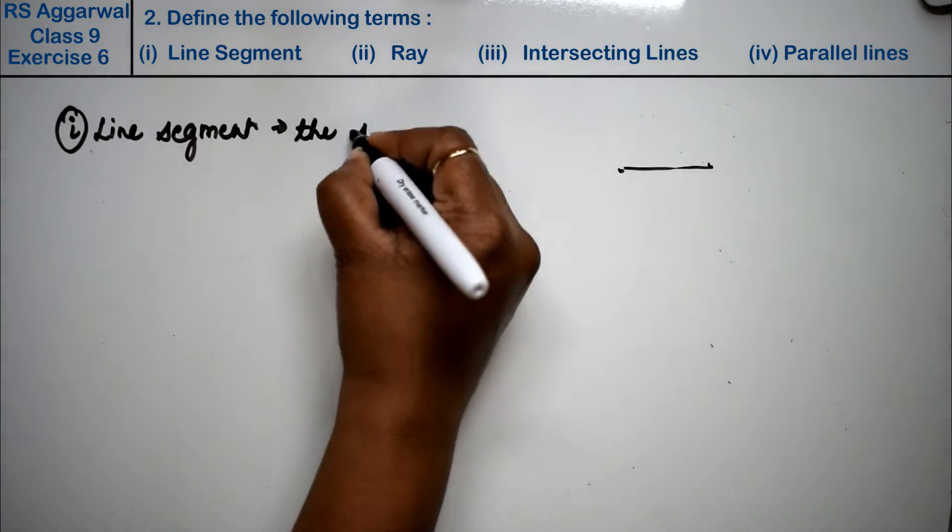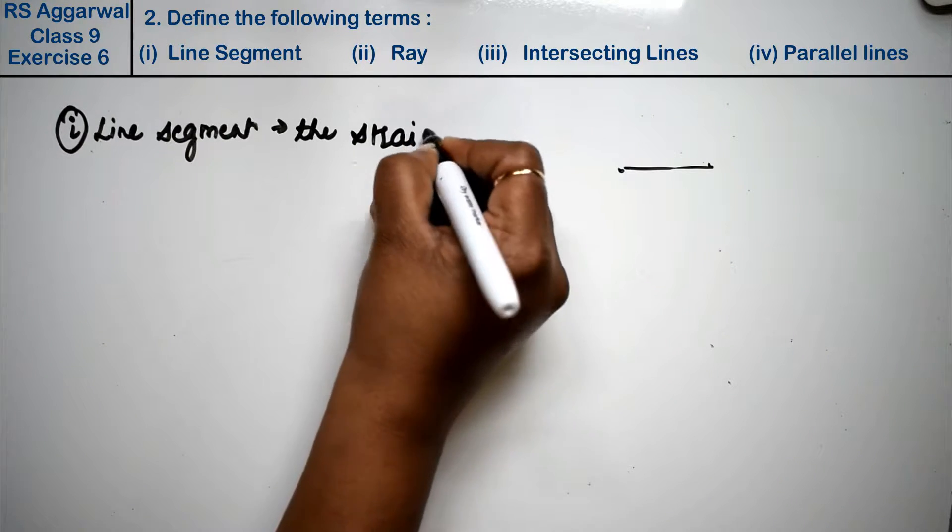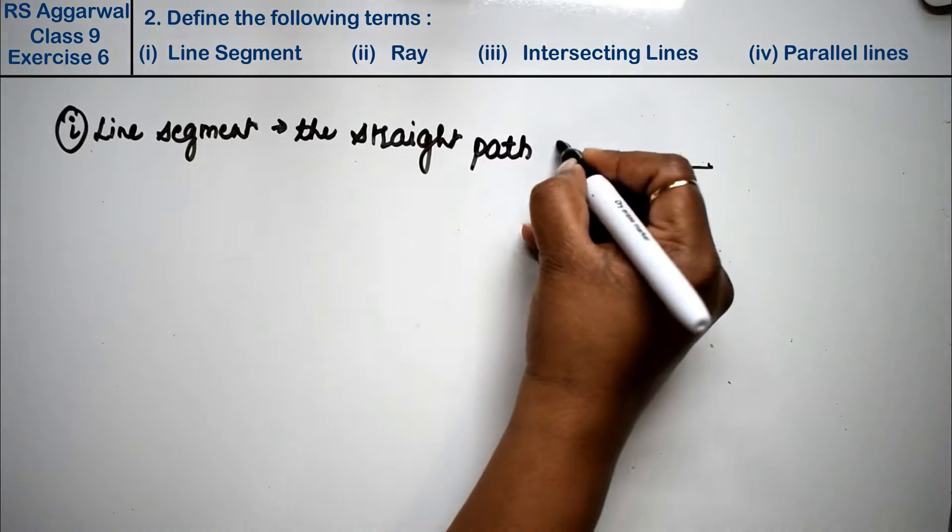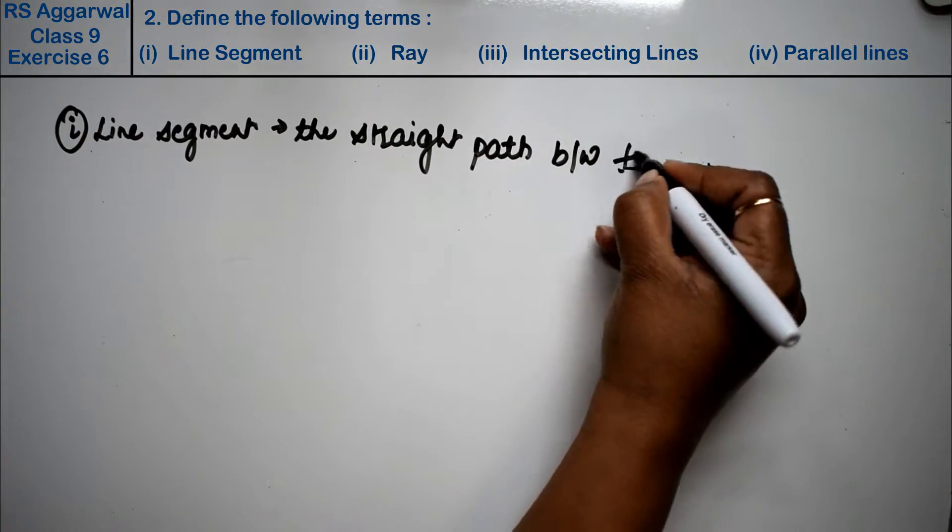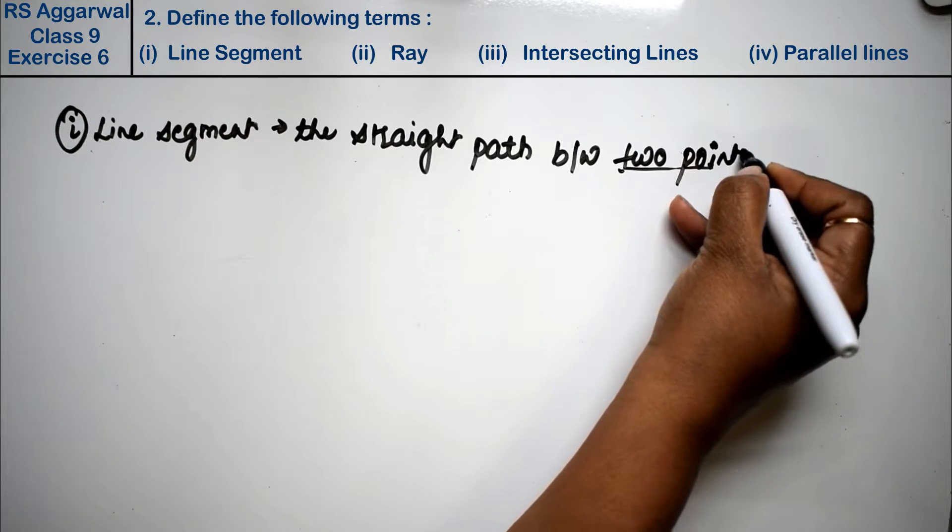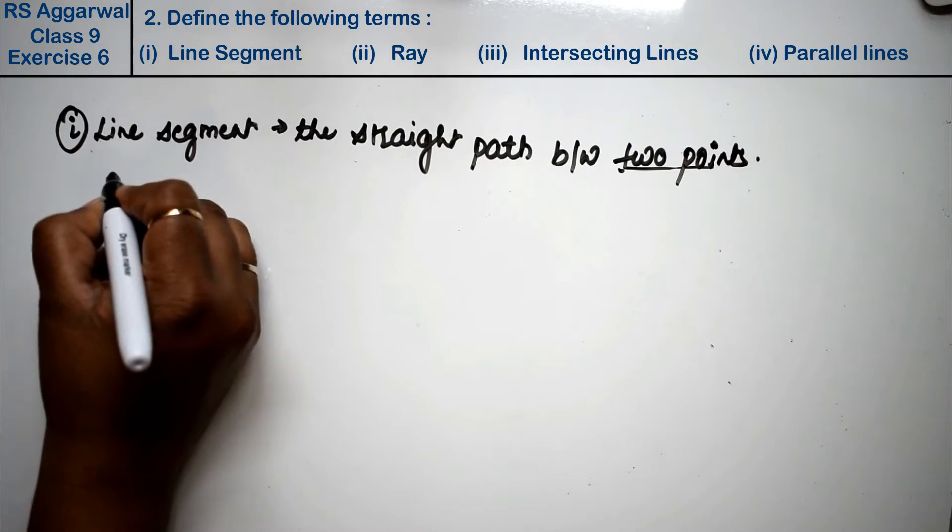The straight path between two points are said to be line segment. And how do we denote it?